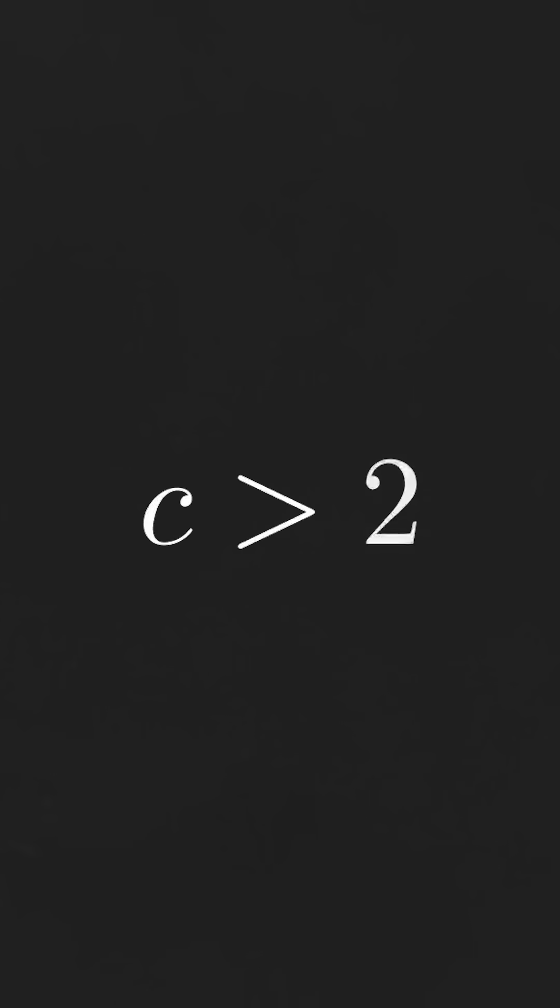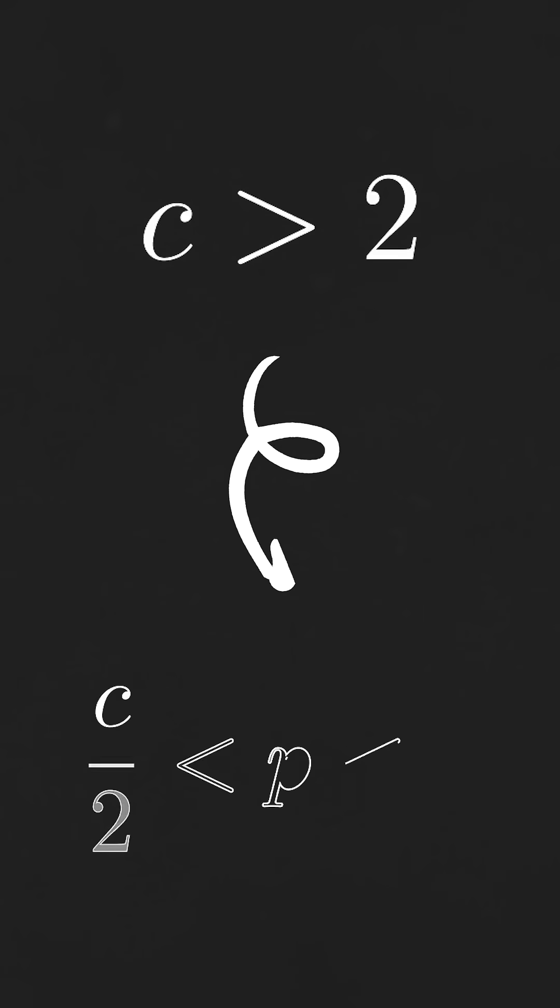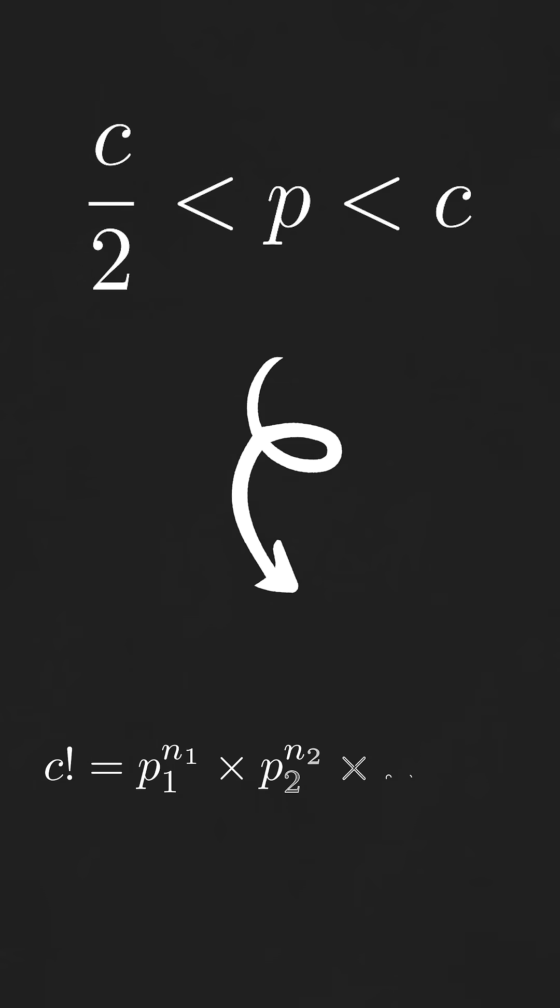And so with c being greater than 2, the theorem tells us that there must exist some prime number, which we can call P, somewhere between c over 2 and c, which would mean that P appears only once in the prime factorization of c factorial.